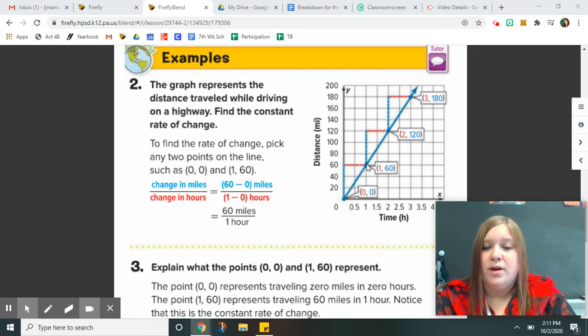Up 60, over one. Does that continue? Well, it went from 60 to 120, that's an increase of another 60. So yes, looking at this staircase, it goes up 60 and over one, so that creates our 60 miles per one hour.